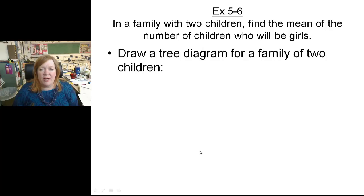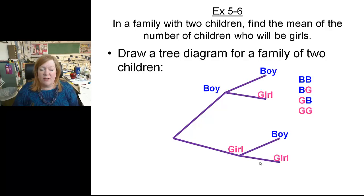So drawing a tree diagram to find the mean number of children who will be girls. If you remember a tree diagram, when you have a baby, it can be a boy or a girl. So then from there, if they have another baby, if they have a boy first, they can have a boy or a girl.